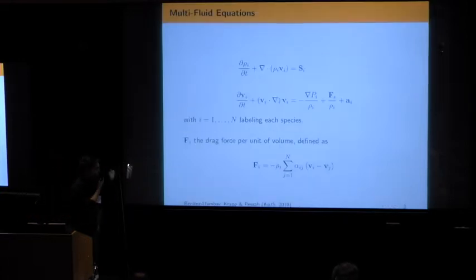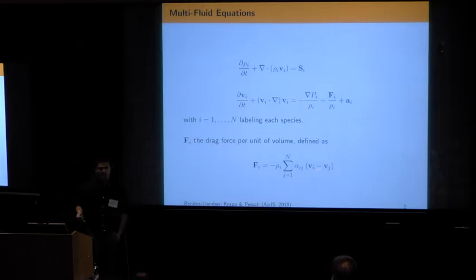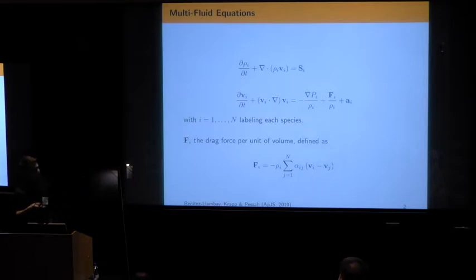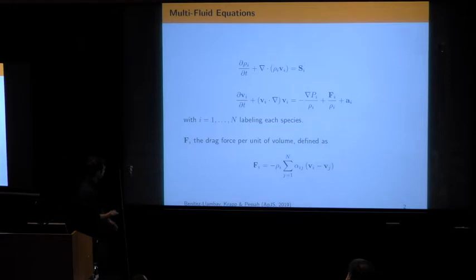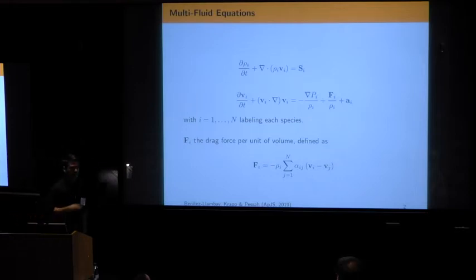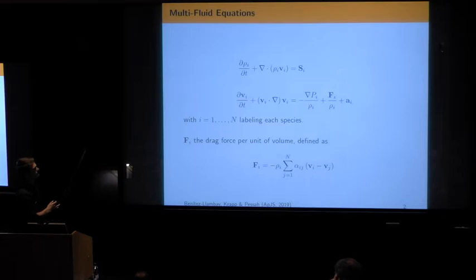The basic idea is to have a framework where we can solve the equations for multiple species and eventually include the mass transfer and momentum transfer between different species. I will keep this simple today, including only the continuity and momentum equations. But this is something you can extend for non-ideal MHD problems, for example by adding ions and electrons, or you can add the energy equation.